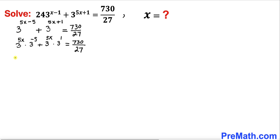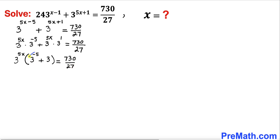Therefore I can write 3 power 5x, and inside the parenthesis we have 3 power negative 5 plus 3 power 1, which is the same as 3, equals to 730 divided by 27. Now let's go ahead and focus on simplifying this part: 3 power negative 5 plus 3.